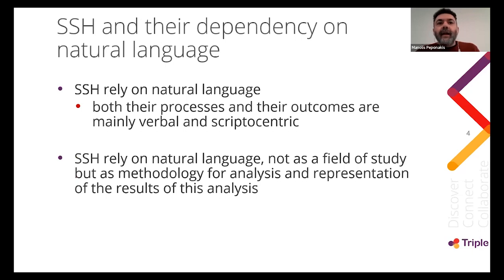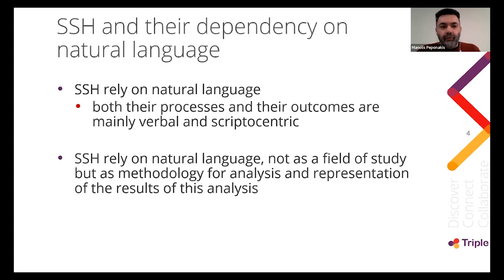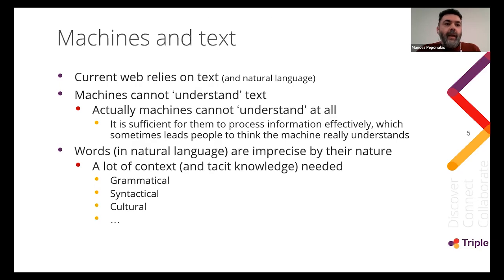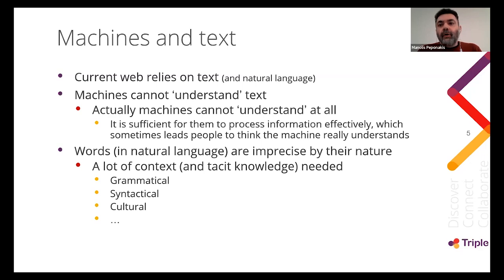Social sciences and humanities are heavily reliant on natural language — not because they study language, but because they use it both in the analysis process and in documenting results and conclusions. Some researchers recommend parallel adoption of more formalistic models, and I agree with that perception, because machines have many problems with text. This problem is not only for social sciences — codifying is difficult because everything on the entire web relies on text, stored in various documents. That is why we call the current web the 'web of documents.'